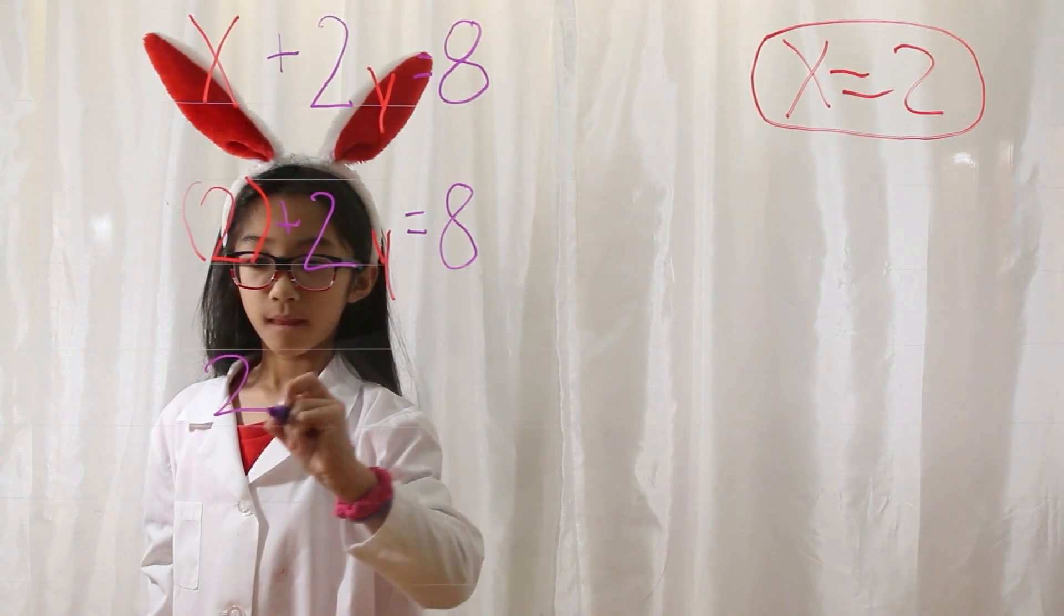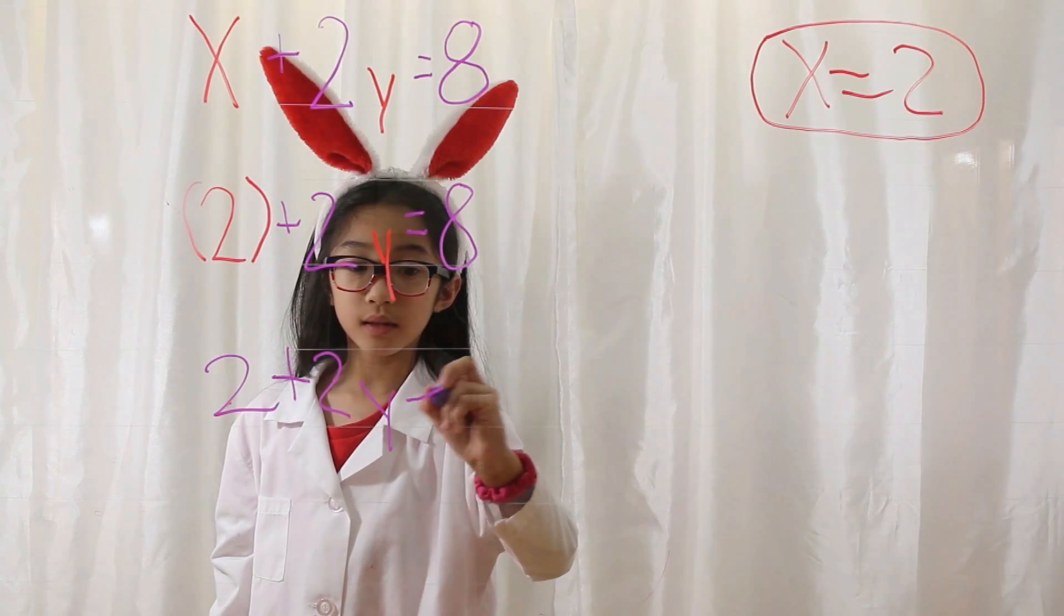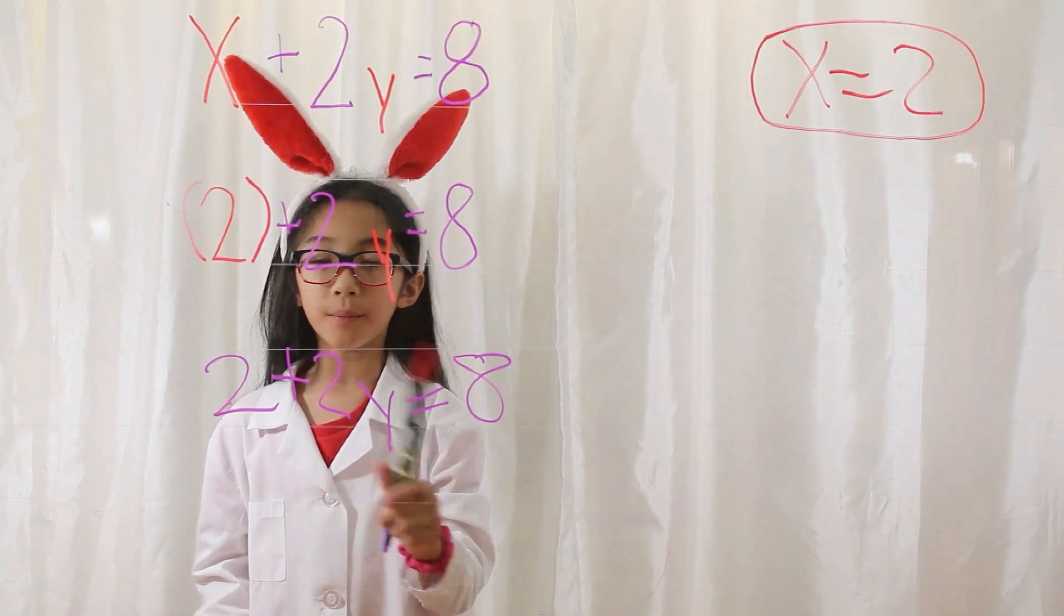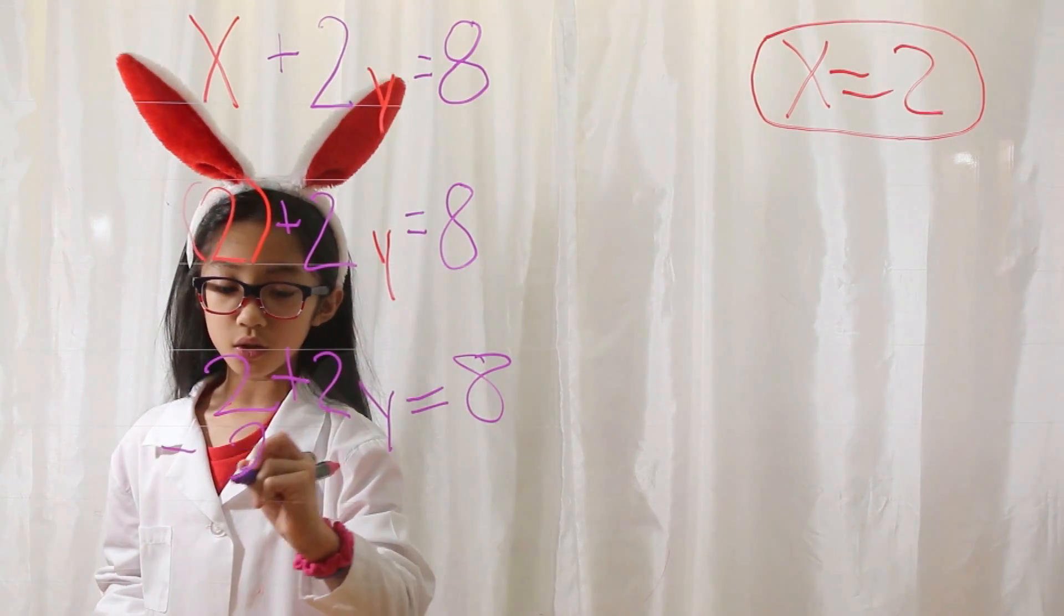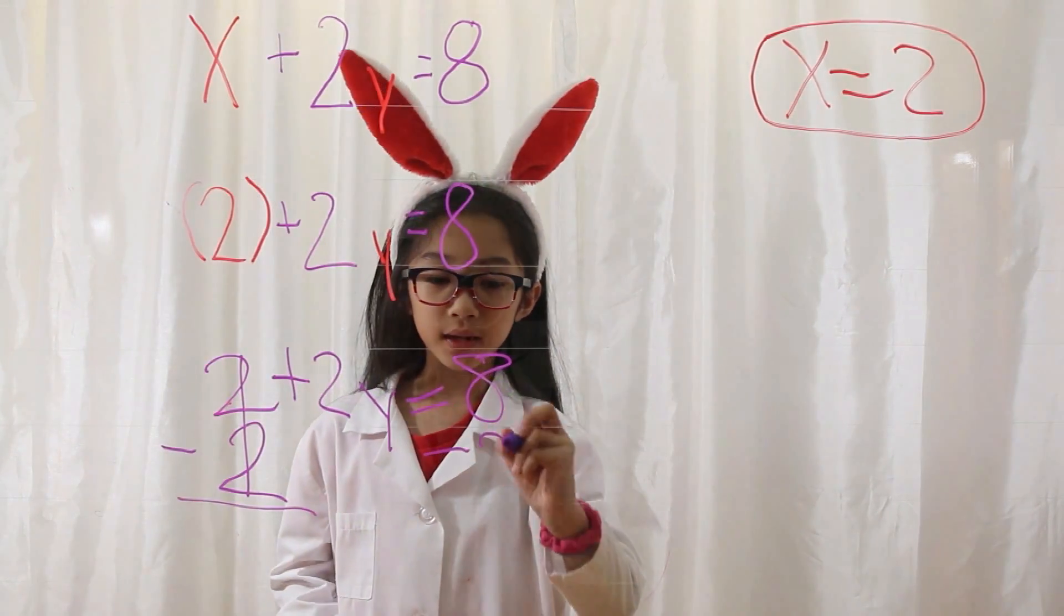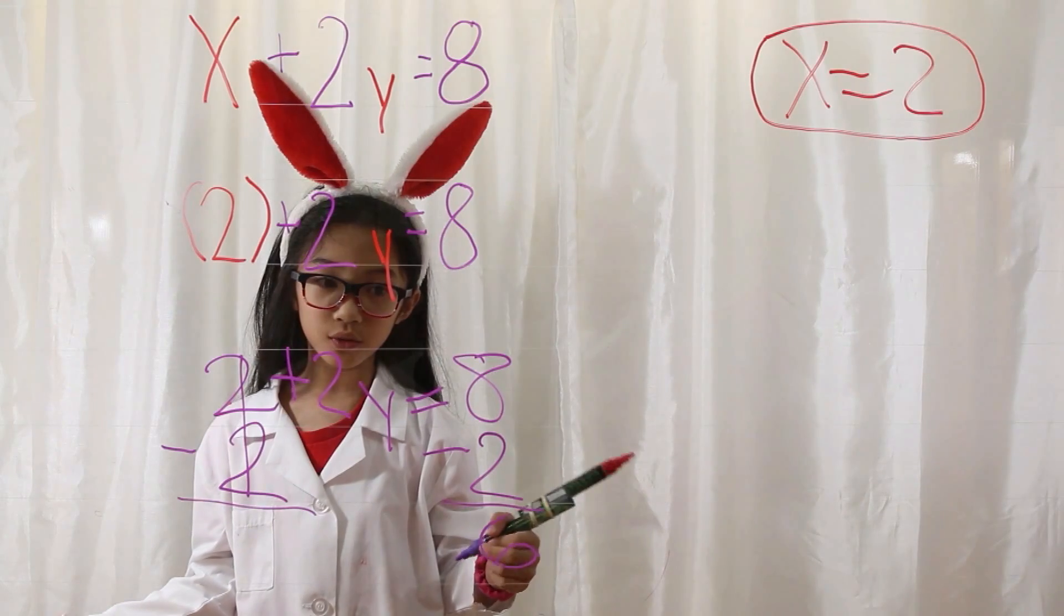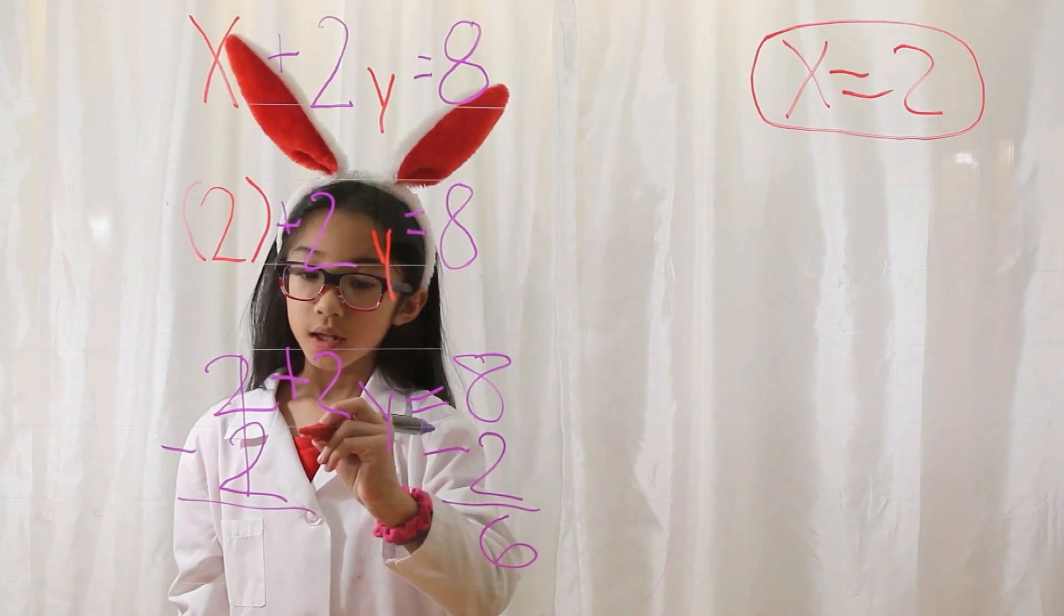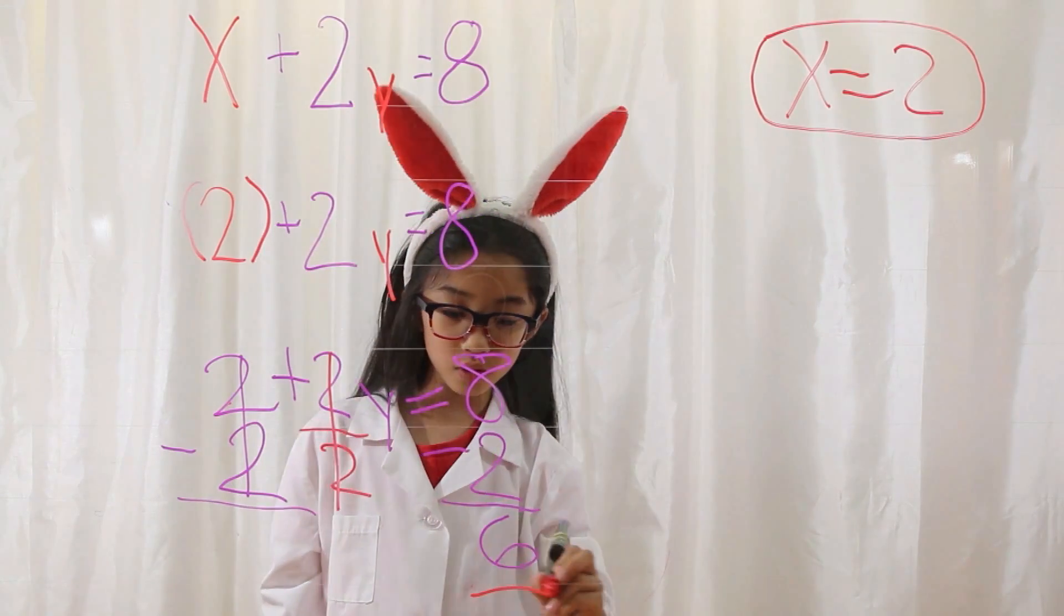2 plus 2y equals 8. Now you have to subtract 2 on both sides of the equation. 2 minus 2 equals 0, so that cancels. And 8 minus 2 equals 6. Now you divide by 2 on both sides. 2 divided by 2 is 1, so that cancels. 6 divided by 2 is 3.